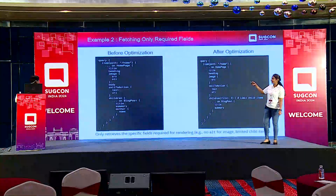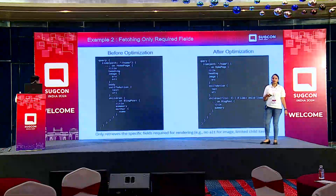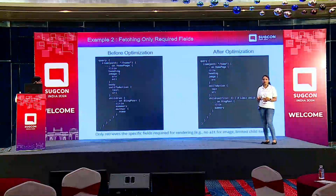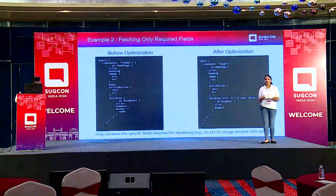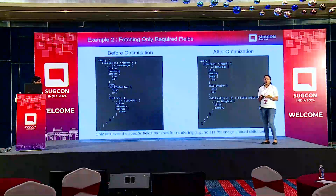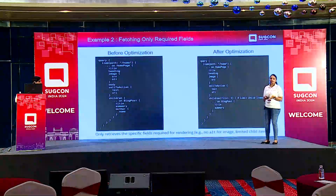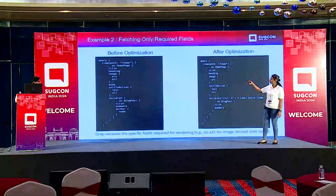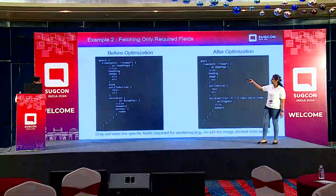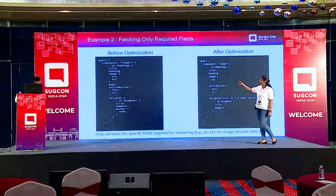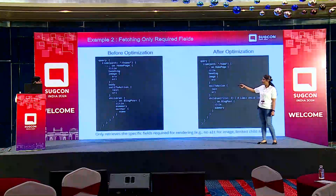The templates we have created in Sitecore can be used directly in GraphQL — they are strongly typed. Unlike traditional REST, we don't have to create a model to support all the fields present in that template; we can use them directly. On the homepage, I have the title, the image, the heading field available, and also the CTA button.